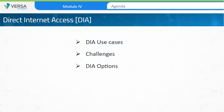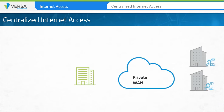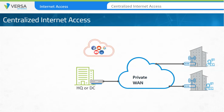Before we discuss DIA, we'll review how organizations use centralized internet access for their networks. In order to provide internet access to remote sites, centralized gateways are often used. The gateways are located at a headquarters or central corporate site. Traffic from remote sites that is destined to the internet crosses the corporate WAN links to the central location, from where the traffic is then forwarded to the internet.